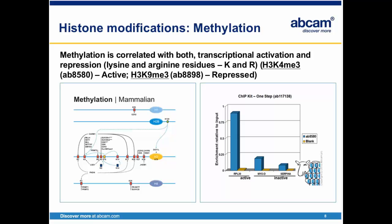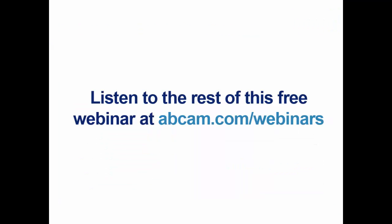A ChIP experiment was performed using the ChIP kit and the E8580 antibody, which precipitates histone H3 trimethylated on lysine 4. Subsequently, the obtained DNA was analyzed, and enrichment of this type of modification was found on the actively transcribed RPL30, in comparison to the inactive MyoD and Serpina. The enrichment levels were compared to the negative control samples, meaning beads only.